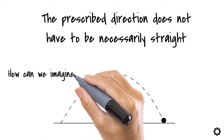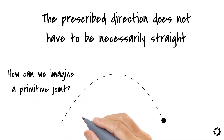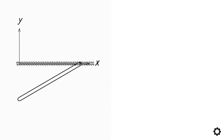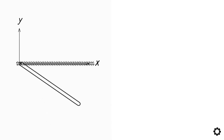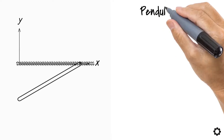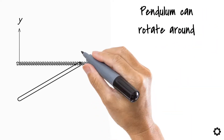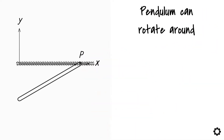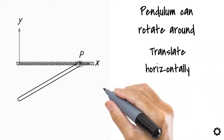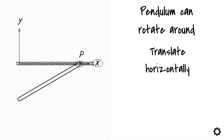How can we imagine a primitive joint? Imagine a pendulum translating on a planar surface. In this case, it is clear that the pendulum can rotate around its connection point P, located in the pin, and at the same time, it can translate horizontally along the x-axis of the inertial reference system used here.